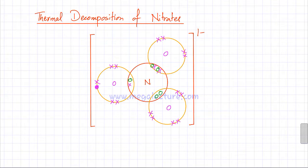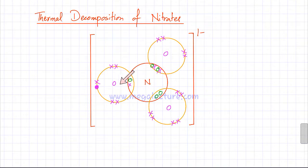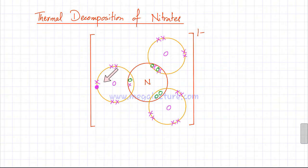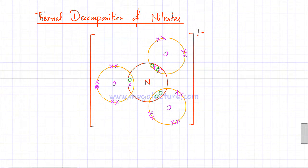This is a typical structure of a nitrate ion: forming a double bond with one oxygen, a single bond with another oxygen — that oxygen gains an electron from outside to complete its outer shell — and forming a dative bond with a third oxygen. So this is the NO3 one-minus ion.